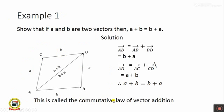Since opposite sides are equal and parallel, we can say AB equals CD and AC equals BD. From the triangular law of vectors, AD — which is the diagonal from one corner to the opposite corner — equals AB plus BD, which gives B plus A. AD also equals AC plus CD, which gives A plus B. Since AD is a single line, A plus B equals B plus A. This law is called the commutative law of vector addition: A plus B equals B plus A.